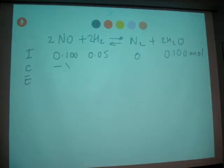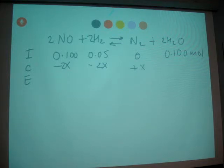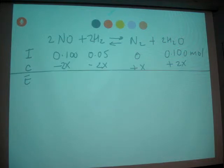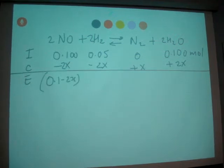For change, here it's negative 2X, negative 2X. Here we have positive X and positive 2X. At equilibrium, you get 0.1 minus 2X, 0.05 minus 2X, plus X, and 0.1 plus 2X for all those species.